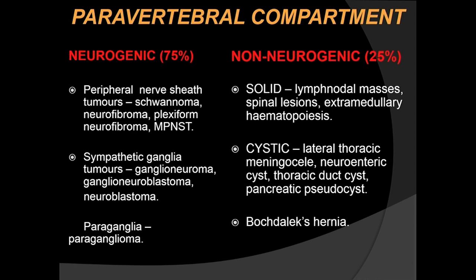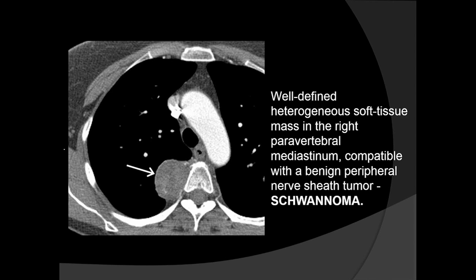In the paravertebral compartment, 75% of lesions are of neurogenic origin, including peripheral nerve sheath tumors such as schwannomas, neurofibromas, plexiform neurofibromas, and malignant peripheral nerve sheath tumors, as well as sympathetic ganglia tumors and paragangliomas. Non-neurogenic tumors account for only 25%. A well-defined heterogeneous soft tissue lesion in the right paravertebral mediastinum on biopsy turned out to be a benign peripheral nerve sheath tumor. It is important to also view lesions in the bone window to differentiate benign from malignant: benign lesions cause pressure erosion, while bone destruction or invasion favors malignancy.